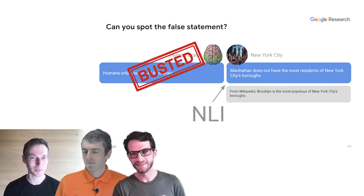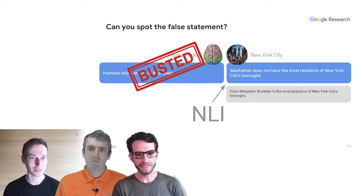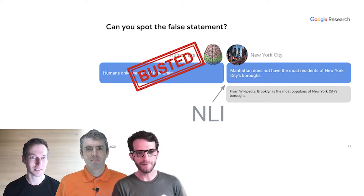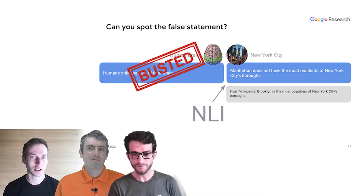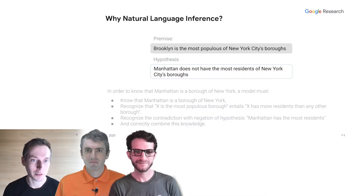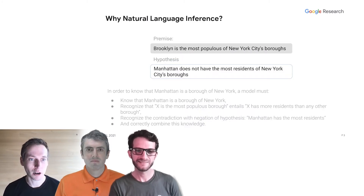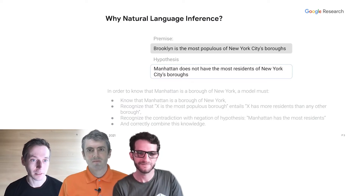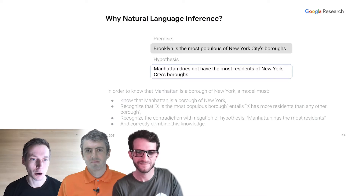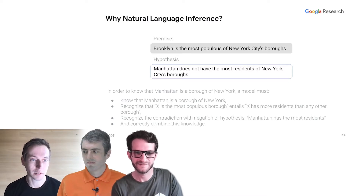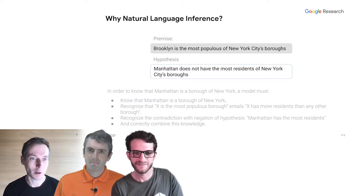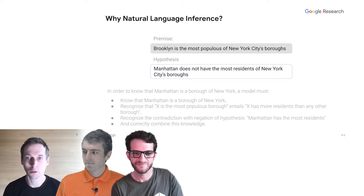While I, as a human, can find a Wikipedia page on New York City and find the passage 'Brooklyn is the most populous of New York City's boroughs,' it might be harder for a computer. To recognize that the hypothesis is supported by that evidence, the model must know that Manhattan is a borough of New York, recognize that 'X is the most populous borough' entails 'X has more residents than any other borough,' that Brooklyn being the most populous implies that Manhattan is not, and correctly combine that knowledge to recognize the contradiction.